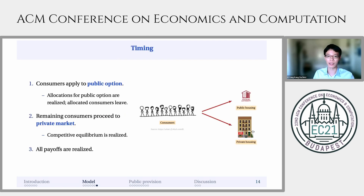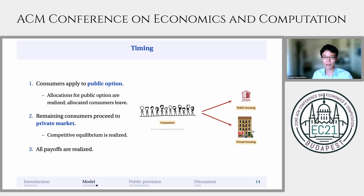The timing of the model is as follows. First, consumers who might want to apply for the public option do so, and then allocations for the public option are realized, and consumers who receive the public option leave the market. After that, the remaining consumers proceed to the private market, where the competitive equilibrium is realized, and at the very end, all payoffs are realized.